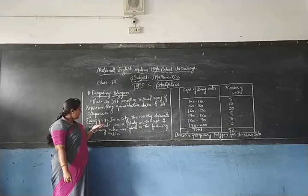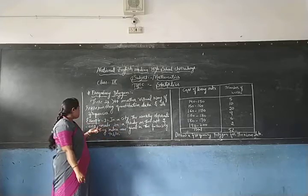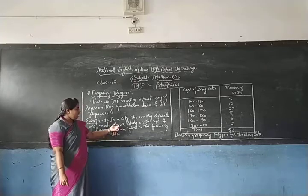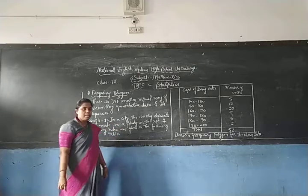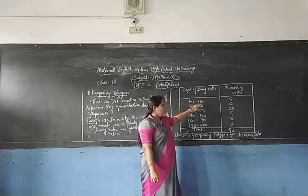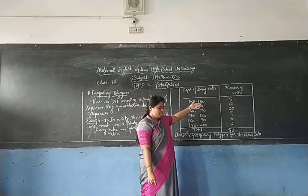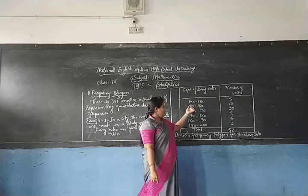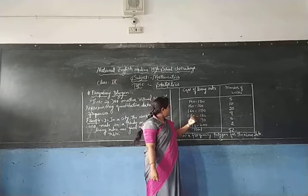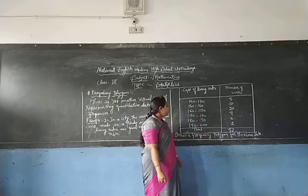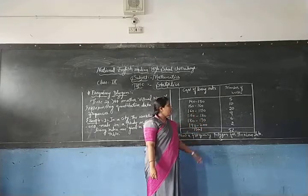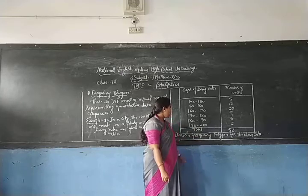Let us look at an example. In this study, the weekly observation and the cost of living index are given in the following table. Cost of living index and the number of weeks: 140 to 150 is 5; 150 to 160 is 10; 160 to 170 is 20; 170 to 180 is 9; 180 to 200 is 2. So the total number of weeks is 52.